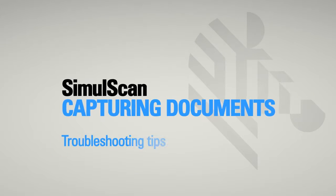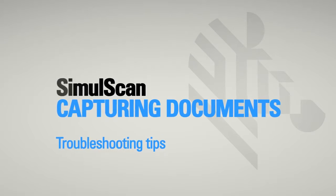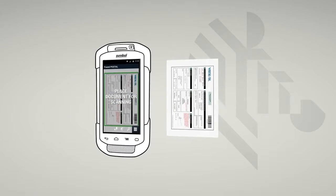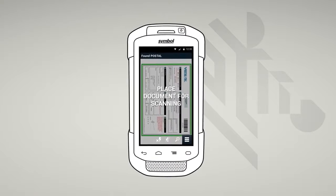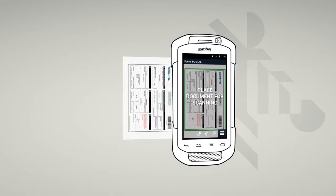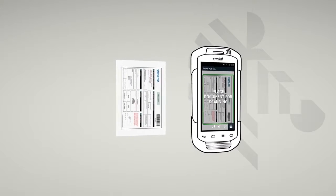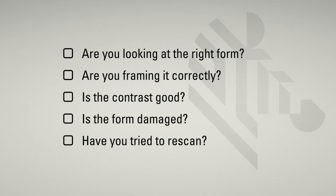It's that easy. Here are some troubleshooting tips. SimulScan will always try to identify, then process your document. If, for some reason, you don't see the green frame or you're unhappy with the results of your scan, please check the following: Are you looking at the right form? Are you framing it correctly? Is the contrast good? Is the form damaged? Have you tried to rescan? If you are still having problems, please contact your organization's IT support.